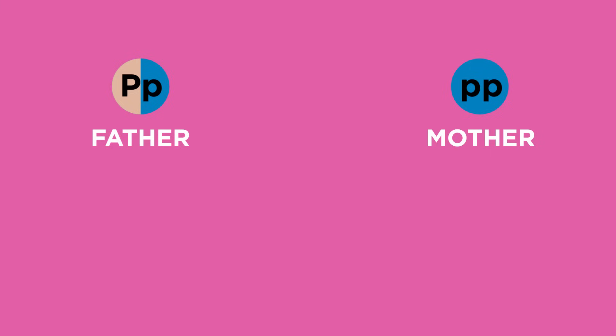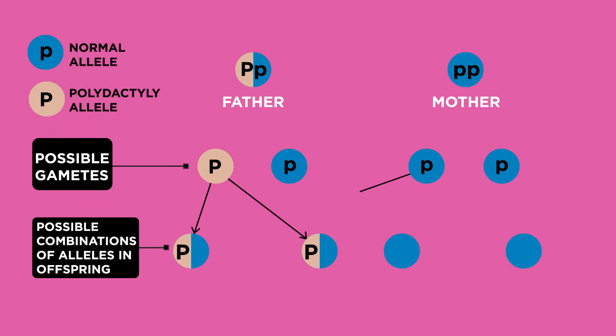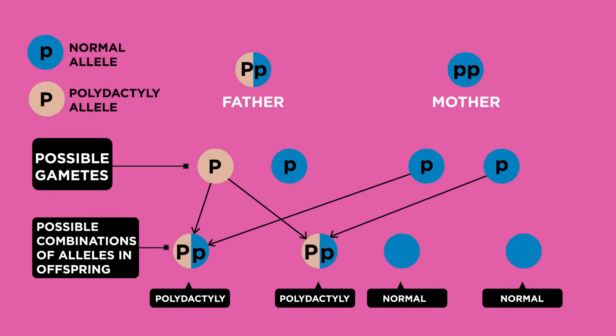So in an example the father has a copy of this allele but the mother does not. We can show this using a genetic diagram. Offspring with one dominant allele big P and one recessive allele little p will also have the condition. Whereas these offspring won't have the condition. Can you see what their genotype must be?